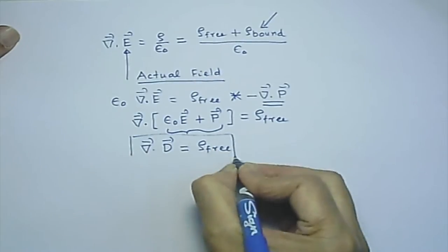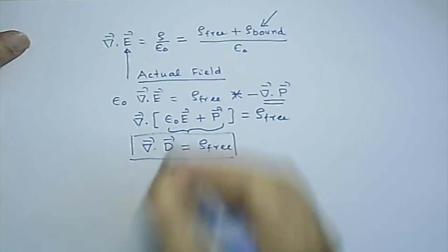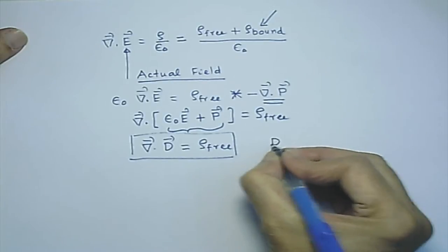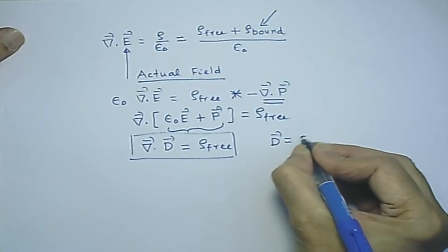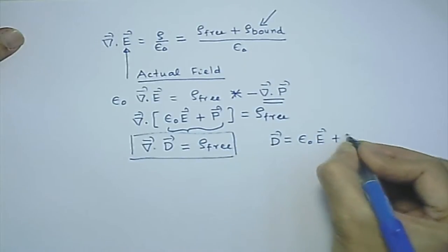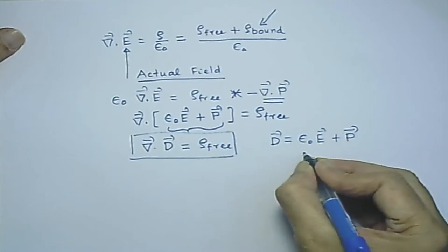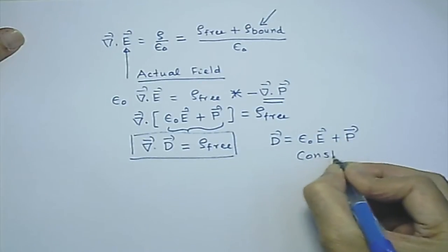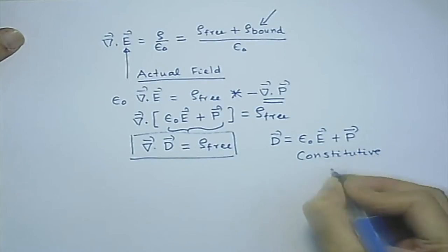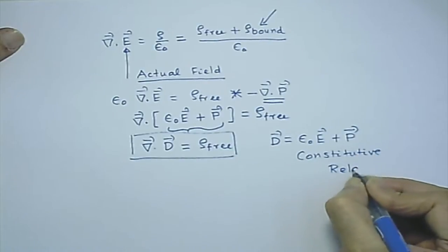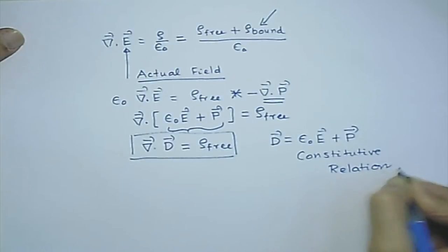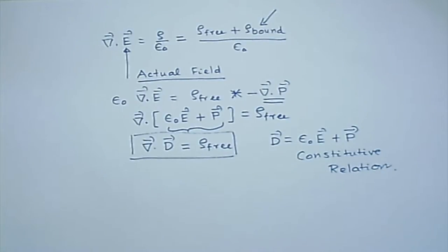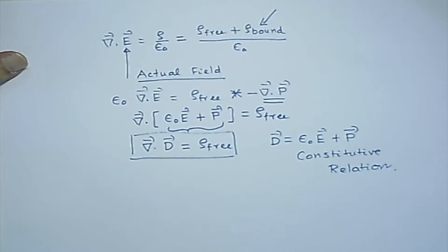So del·D = rho_free. This is my Maxwell's equation, supplemented with the definition of D in terms of E and the polarization — these are called constitutive relations. The Ohm's law is also a constitutive relation. These are not parts of Maxwell's equations, but they must be taken along with Maxwell's equations for a proper description.